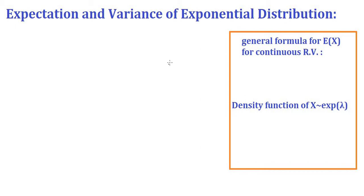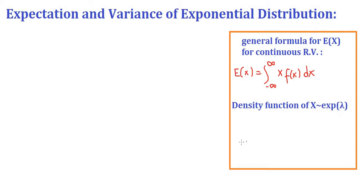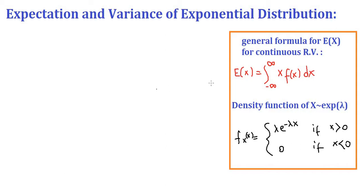Hello everybody. In this video we are going to derive the expectation and variance of the exponential distribution. For this we are going to need the general formula for expectation of a continuous random variable: expectation equals the integral from negative infinity to infinity of x times the density function. We will also need the density function of exponential with parameter lambda: f(x) = λe^(−λx) if x > 0, and 0 if x < 0.